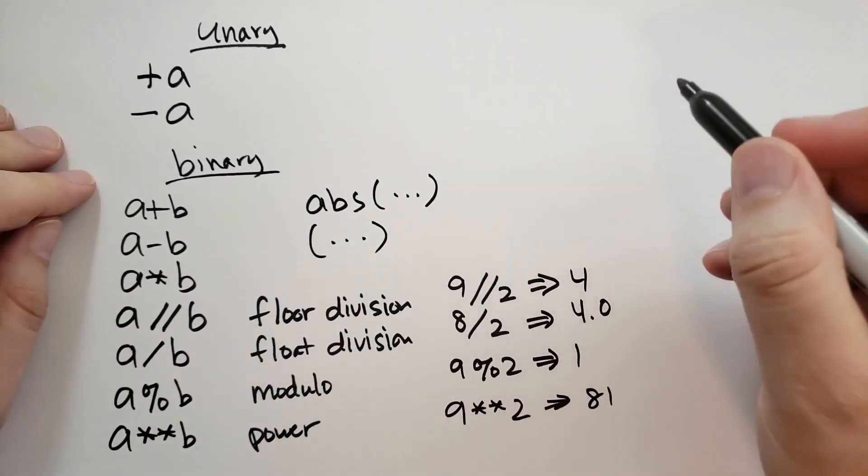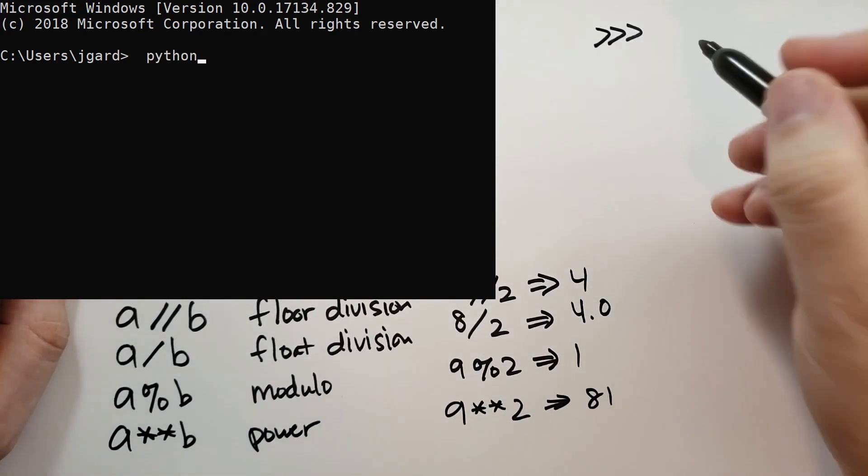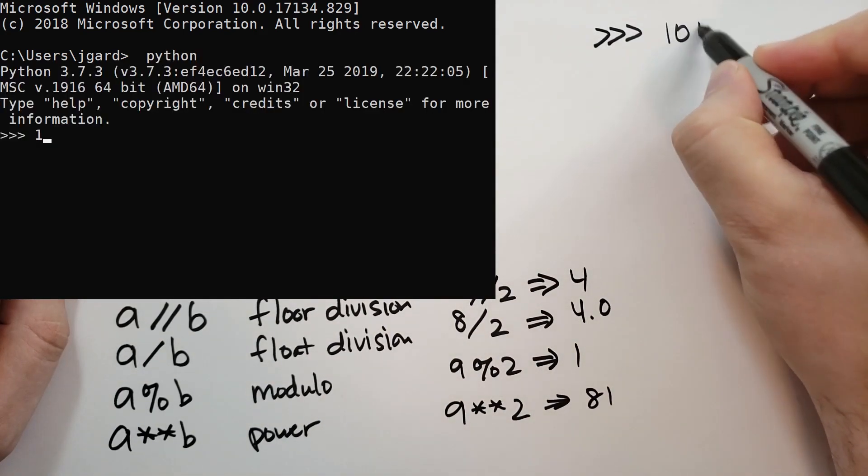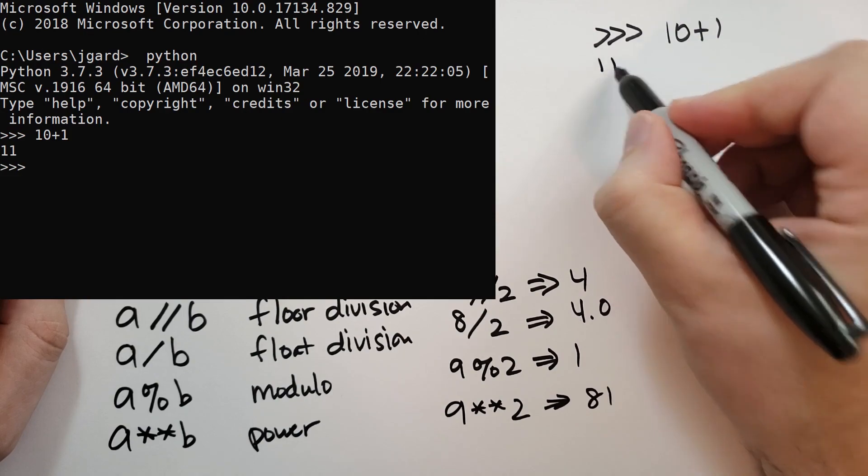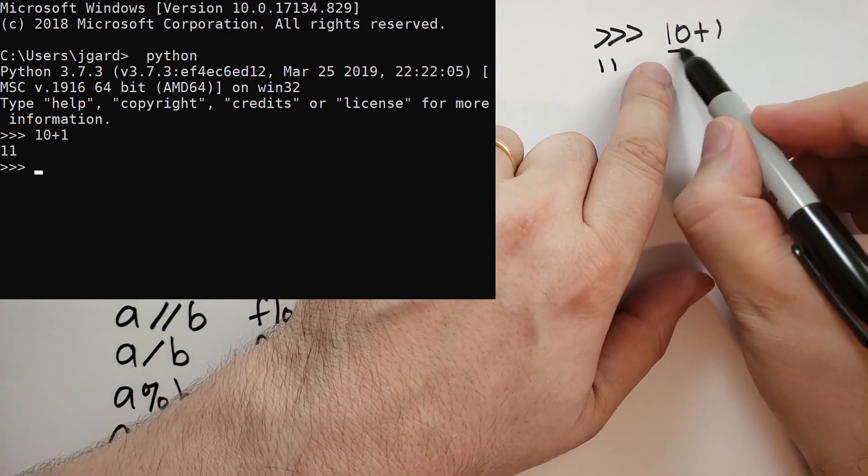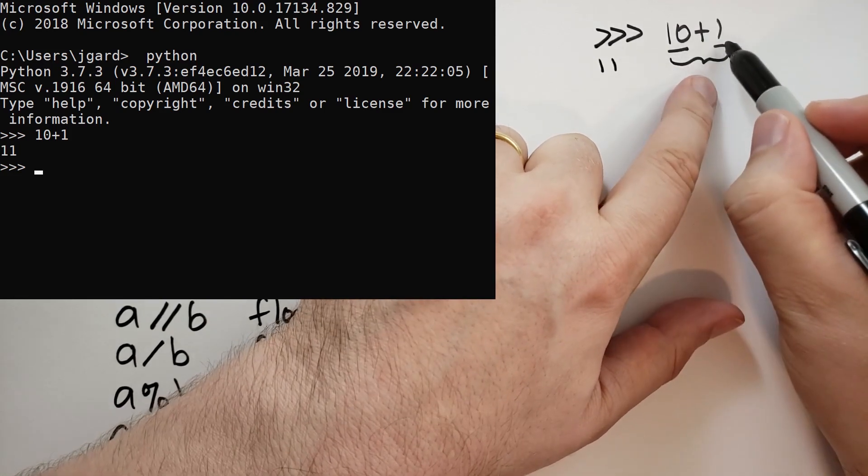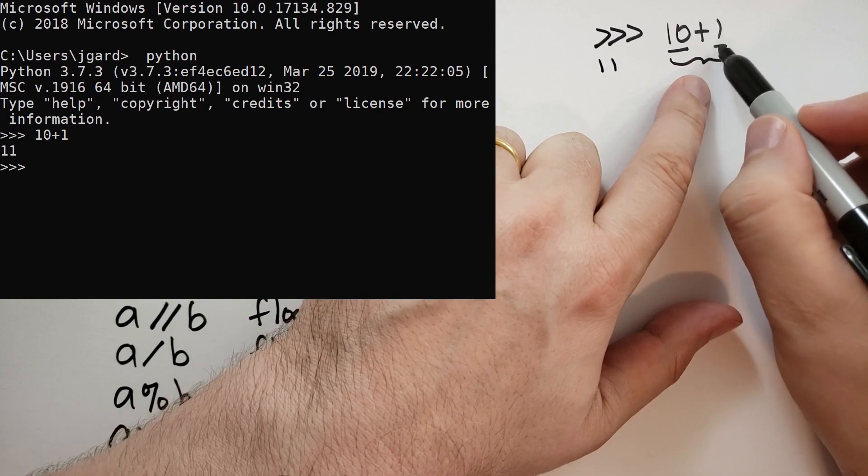Let me give you some examples of some expressions. So we're going to go into interactive mode. And we're going to say 10 plus 1. Well, that's obviously going to give you 11. And if you think about it, this is a literal, that's a literal. And then this here is the expression A plus B, where A and B are two integers.